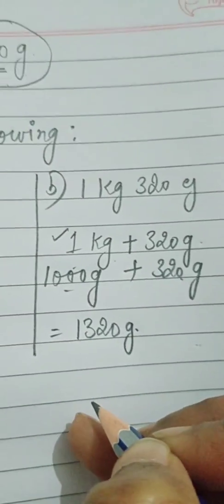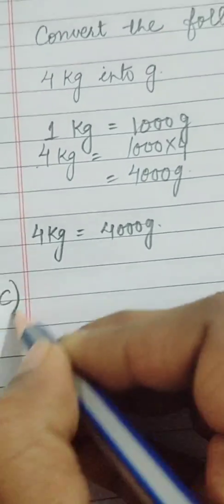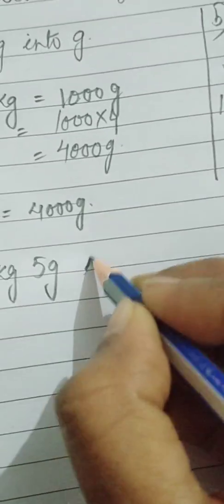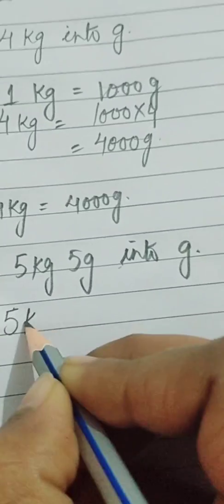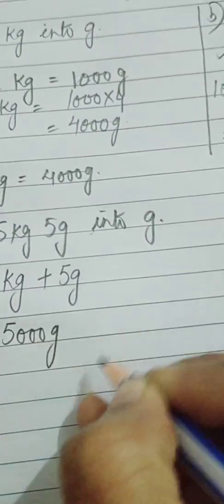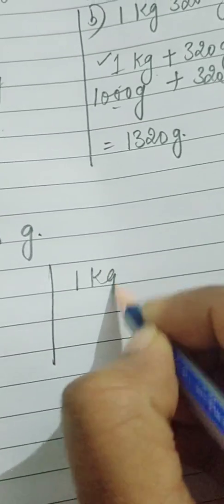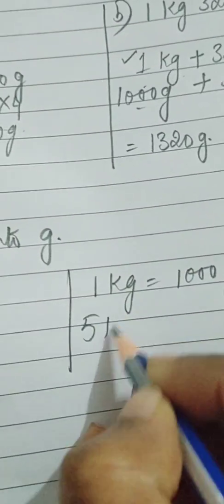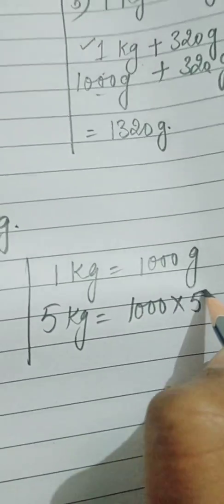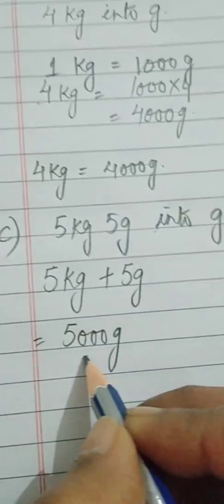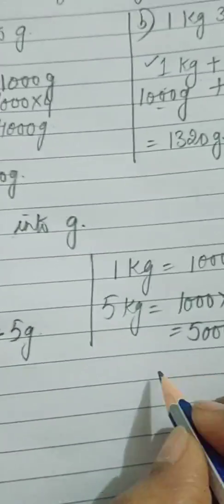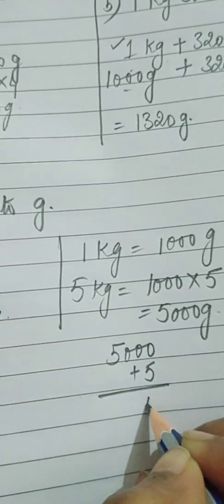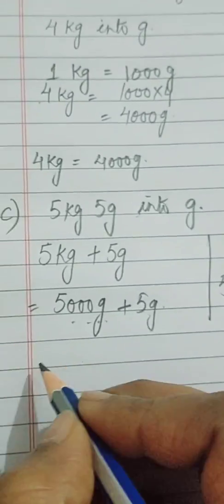Part C: 5 kilogram 5 grams into grams. We write 5 kilograms plus 5 grams. Now 5 kilograms equals 5000 grams, because 1 kilogram is 1000 grams and 5 kilograms means 1000 multiplied by 5, which is 5000 grams. So 5000 grams plus 5 grams equals 5005 grams.